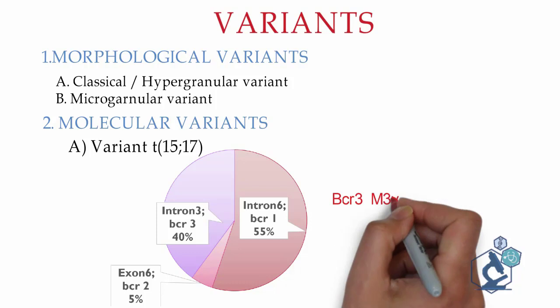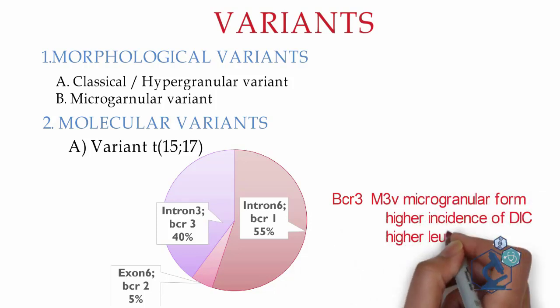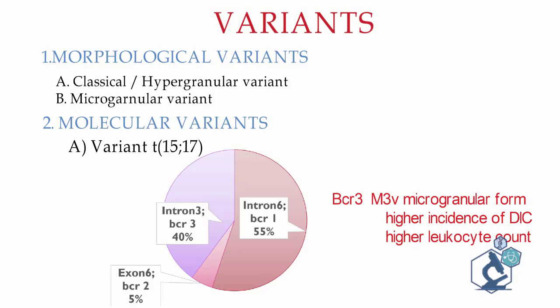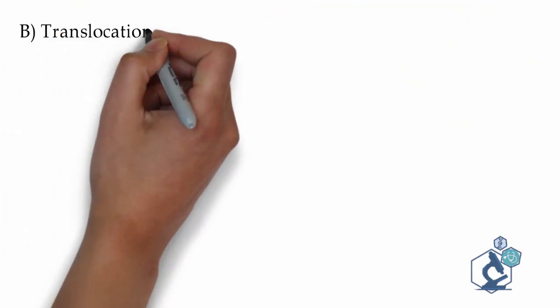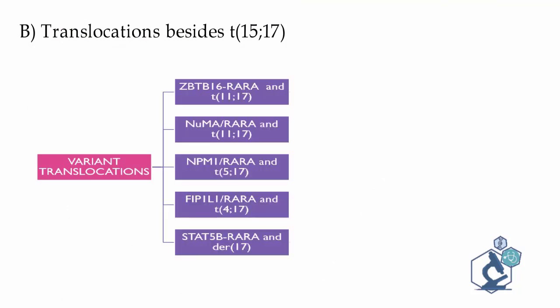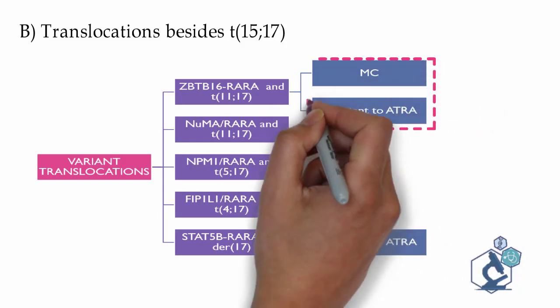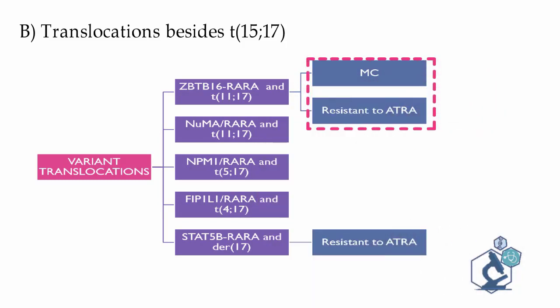BCR-3, which causes the microgranular form, has a higher incidence of DIC and a higher leukocyte count. There are a few translocations besides t(15;17); these include ZBTB16, NUMA, NPM1, FIPIL1, and STAT5B. ZBTB16-RARA at t(11;17) is the most common variant translocation and is resistant to ATRA, as is STAT5B-RARA.